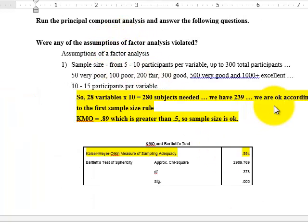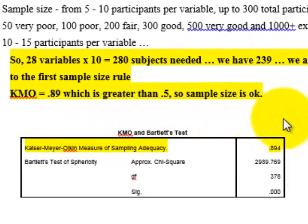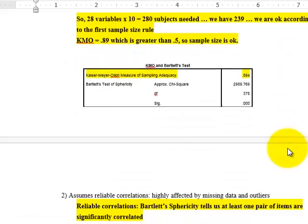This will answer questions about the sample size and the sphericity. The first assumption is sample size. It depends on which book you read, but it says basically right around anywhere between 5 and 10 participants per variable. So if we've got 28 variables, 28 questions, if you multiply that by 10, that's 280. We have 239. So that's somewhere between 5 times 28 and 10 times 28. So with this first rule, I'm going to say that our sample size is OK.